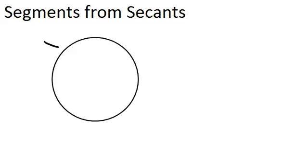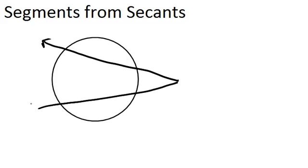Remember that a secant line is a line that intersects a circle twice. So we have two secant lines that are intersecting outside the circle right here. And four segments have been created: one, two, three, and four. And there's a relationship between all four of those segments.